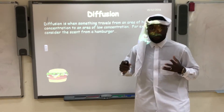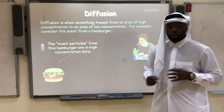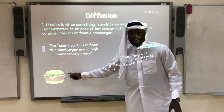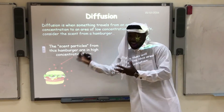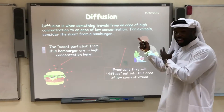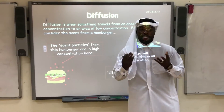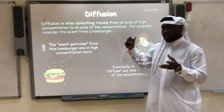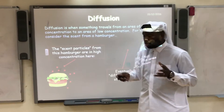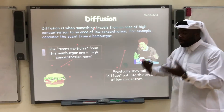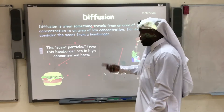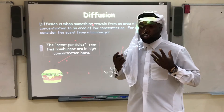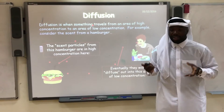If we look at an example of diffusion — if we have this lovely juicy bean burger — the scent particles over here will move from an area where they are highly concentrated to an area where they are less concentrated. Now, this movement of particles is completely random, but there is a net gain of particles to the low concentration area. The particles diffuse to the area of low concentration until equilibrium is reached, so until the particles are equally spaced out.